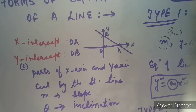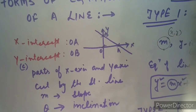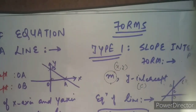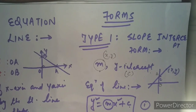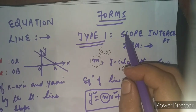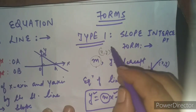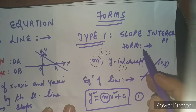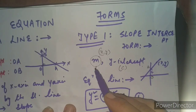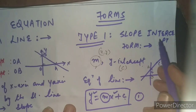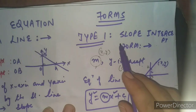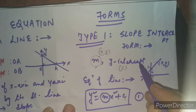Now I am going to talk about the very important topic of your chapter — the different forms of equation of a line. The first type is the slope-intercept form. Slope, as all of you know, is denoted by small m. And intercept here would always mean the y-intercept — remember, intercept always means the y-intercept.